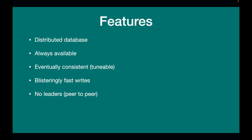Cassandra does not have a leader architecture like MySQL or some other databases. Even though the database is distributed, there is no single leader. When a write comes in, any of the nodes can take in a write and then replicate it amongst the replica nodes. Unlike MySQL or PostgreSQL where there is one master node that takes in the writes, Cassandra does not operate like that. This makes Cassandra more resilient — if one machine goes down, you can still read and write to Cassandra effectively.